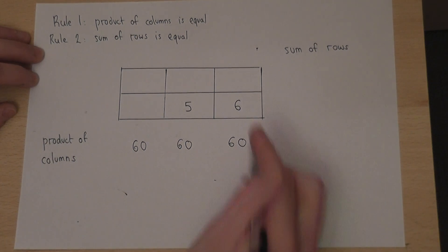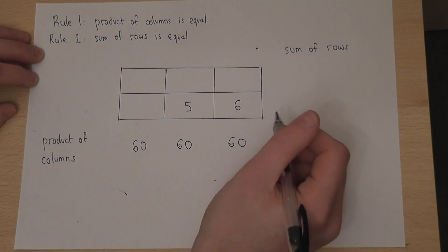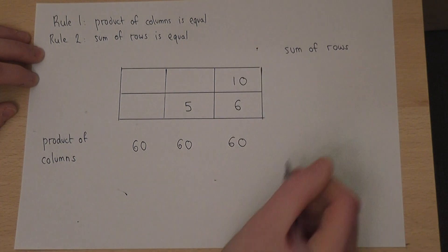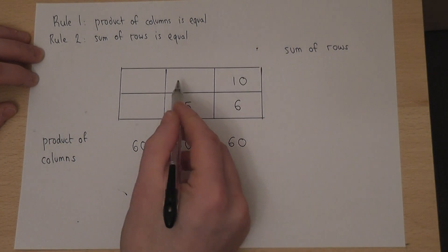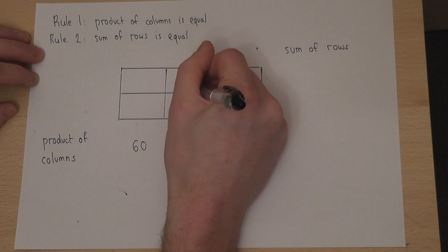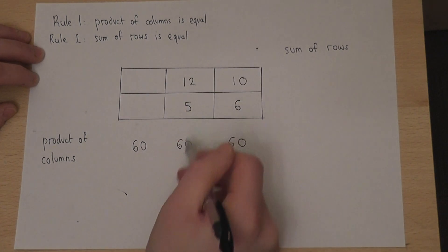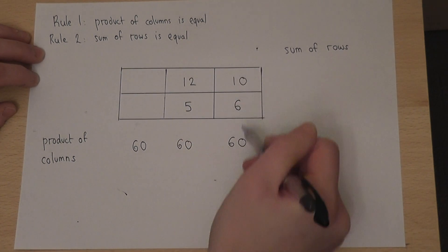So I can therefore find the missing number here, which must be 10, and the missing number here, which must be 12, because 12 times 5 is 60, and 10 times 6 is also 60.